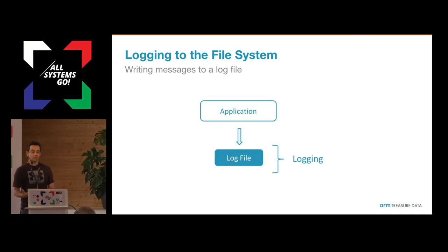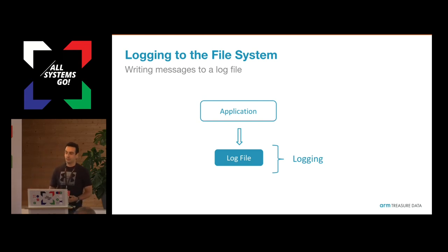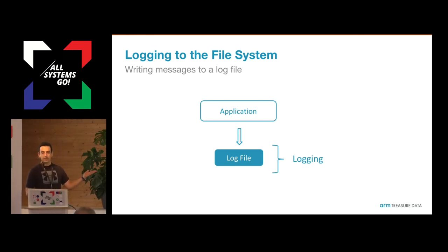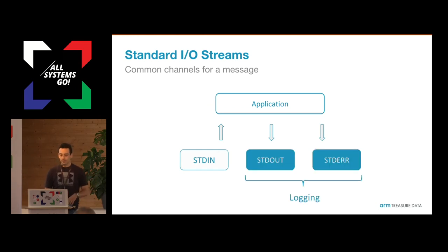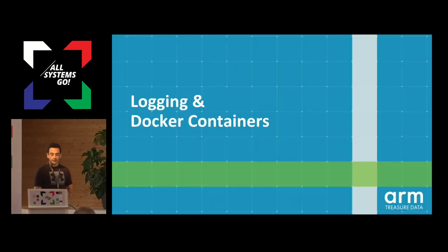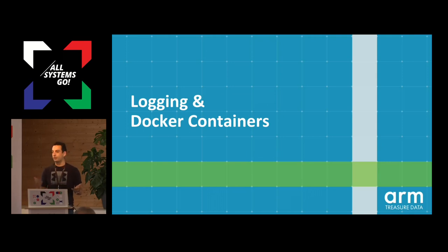When an application wants to log something, if you're doing logging it's because you want to do data analysis. The way to do data analysis is to concentrate or aggregate your logs somewhere. Basically one application triggers a message to a log file or to a stream — standard output or standard error — that is a common pattern. In the container space we focus mostly on standard output and standard error. Considering that Docker is one of the main container engines, everybody knows that a container by itself doesn't really exist — a container is just a set of rules with a kernel applied to a process.